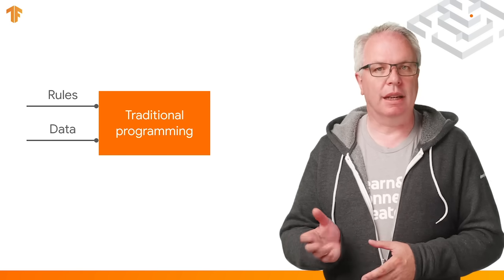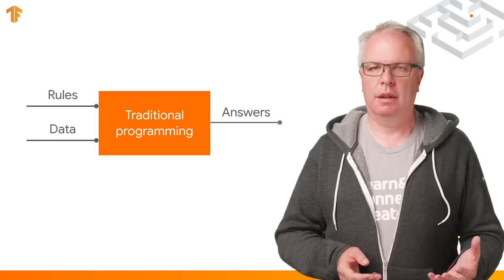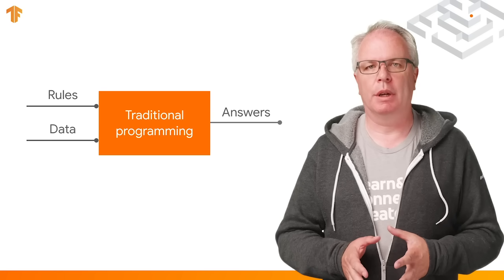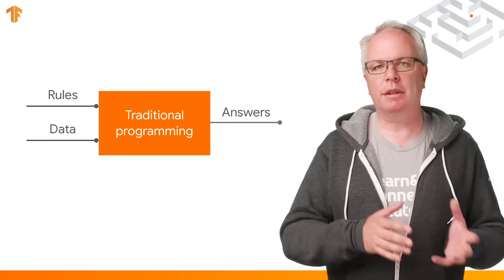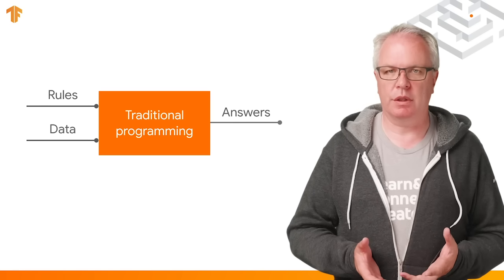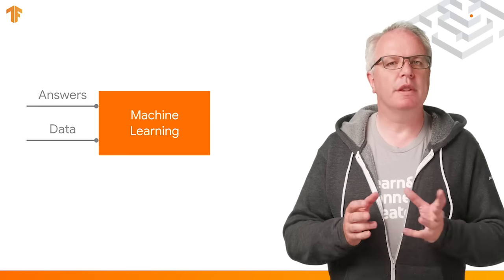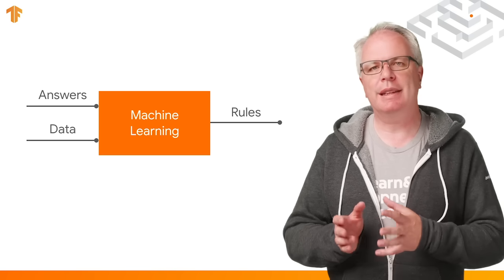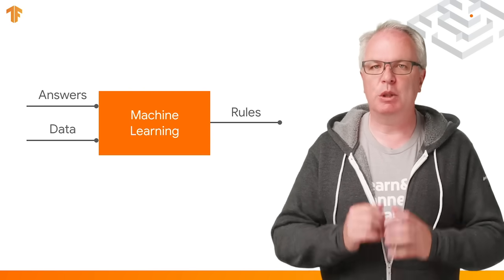That's the core of machine learning and the path to artificial intelligence. So traditional programming looks like this. You have data, for example, a feed from the webcam, and you have rules that act on this data. These rules are expressed in a programming language and are the bulk of any code that you write. Ultimately, these rules will act on the data and give you an answer. Maybe it sees a rock, maybe it sees a paper, and maybe it sees scissors. But what if you turn this diagram around, and instead of you as the programmer figuring out the rules, you instead give it answers with the data and have the computer figure out what the rules are? That's machine learning.